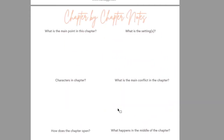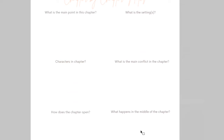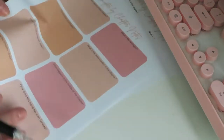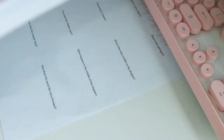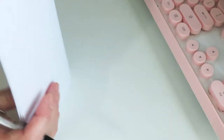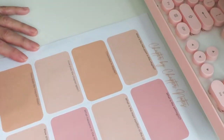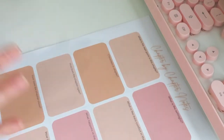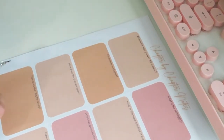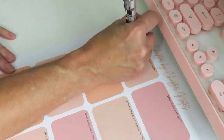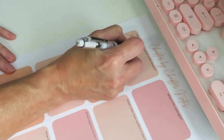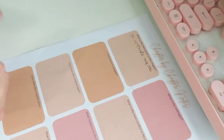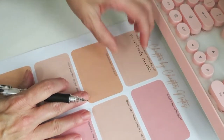Alright guys, so here we go. These are the three different options I just shared with you: the color option, the one with the clear boxes, and then the one with no boxes at all. I'm going to choose the colorful one just because I think it's pretty — that's why I created it, I love these colors. So I'm going to use an example from my current novel to answer these eight prompts. The first question is: what is the main point of the chapter? For me, it is to introduce my main character.